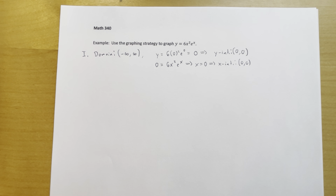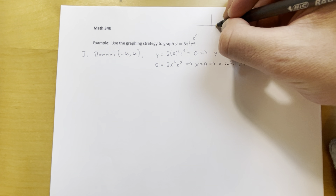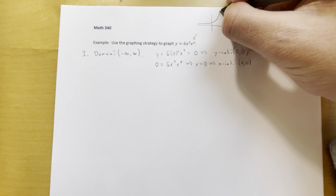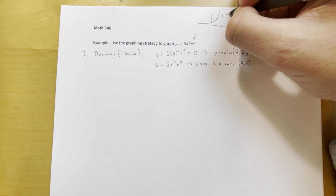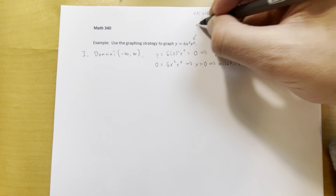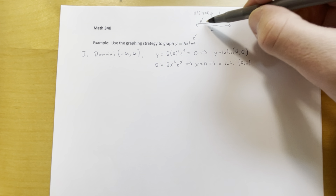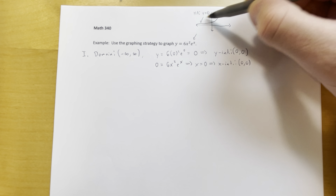Next up are vertical and horizontal asymptotes. This function has no vertical asymptotes at all, because vertical asymptotes occur where a function is not defined, and this function is defined everywhere. However, we probably will end up with a horizontal asymptote because of that exponential function. The graph of y equals e to the x has a horizontal asymptote at y equals 0, but the graph only approaches that asymptote going in one direction.